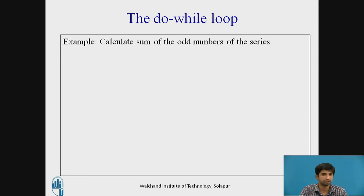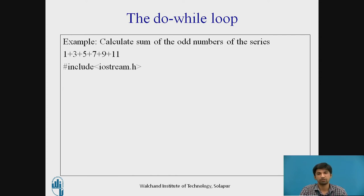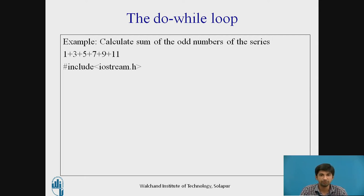Let's go with an example: calculating the sum of the odd numbers of the series 1 + 3 + 5 + 7 + 9 + 11. The answer is 36. The program includes #include <iostream.h>, which is the input/output stream header file containing predefined objects cout and cin — cout for displaying values and cin for taking input, similar to scanf. We also include #include <conio.h>, which provides the functions clrscr() to clear the screen and getch() to hold the output on screen.